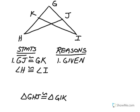I've got two overlapping triangles here, and it's always good to redraw those and split them apart. First, I'm told that GJ is congruent to GK, so I'll mark those two little pieces. Then angle H is congruent to angle I, so I'll mark those.